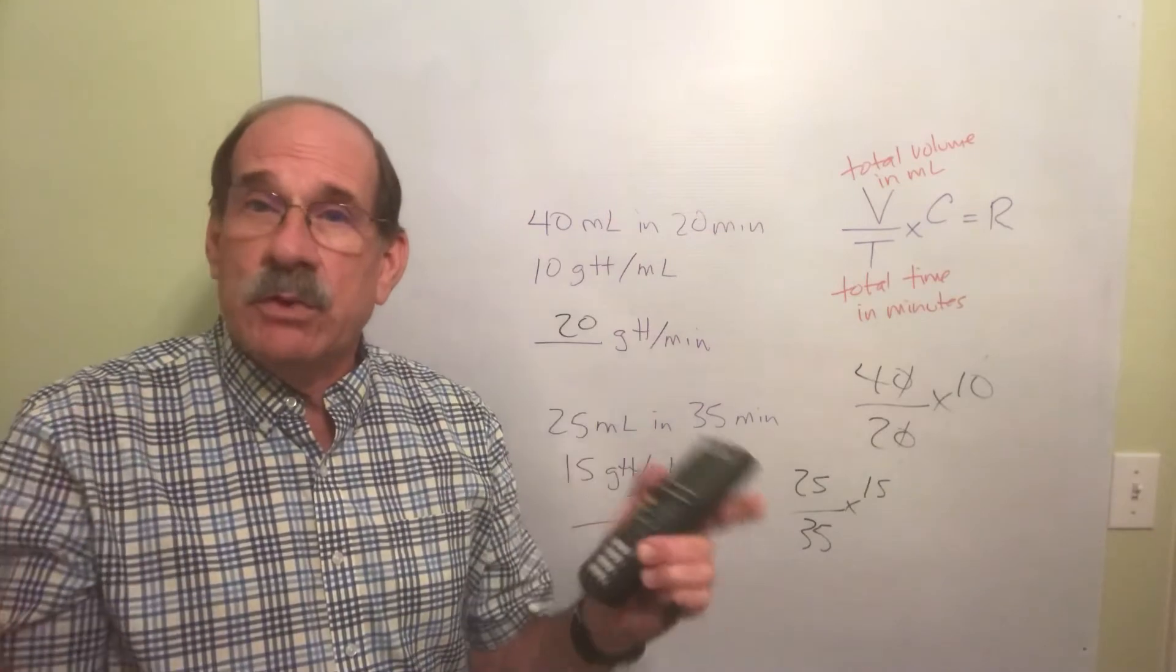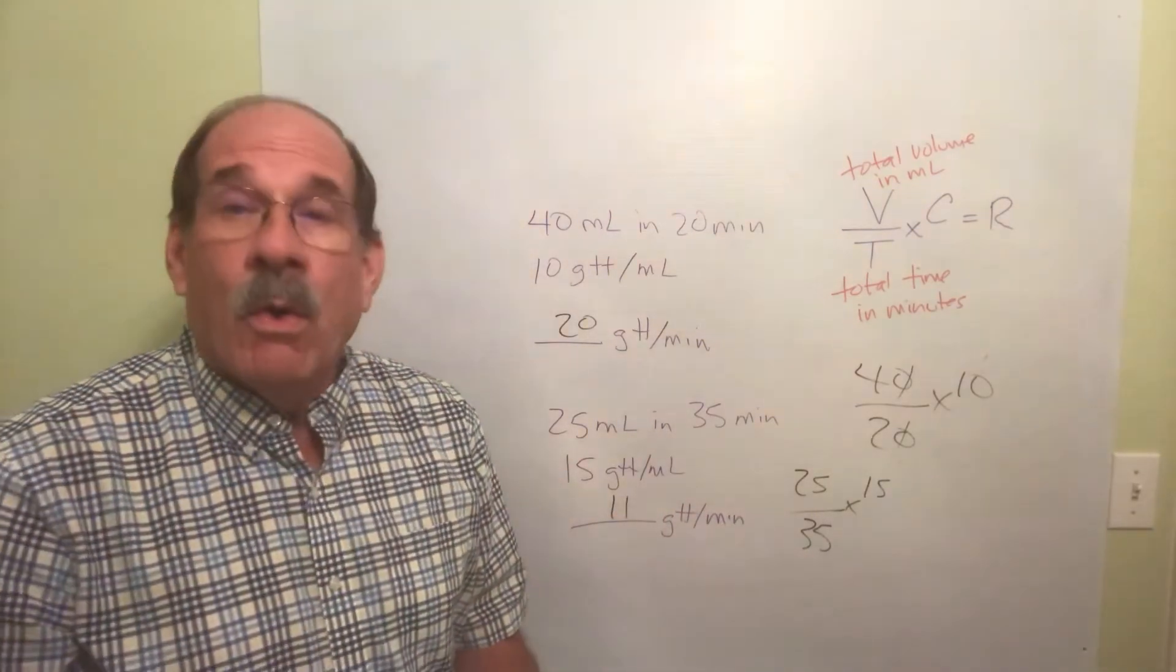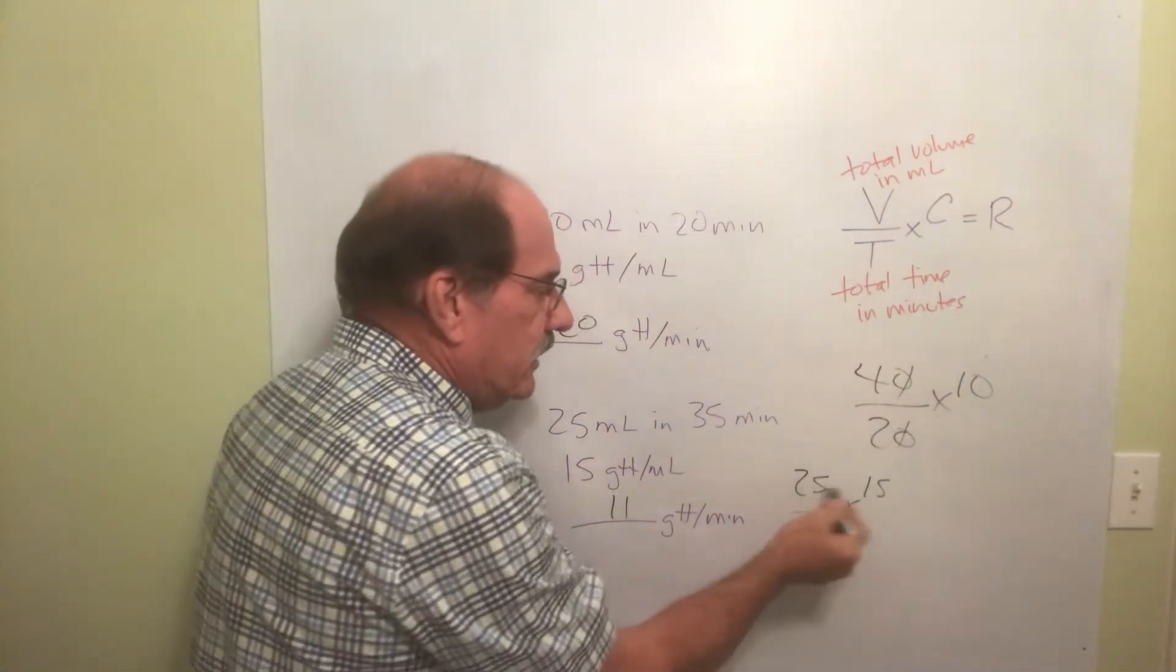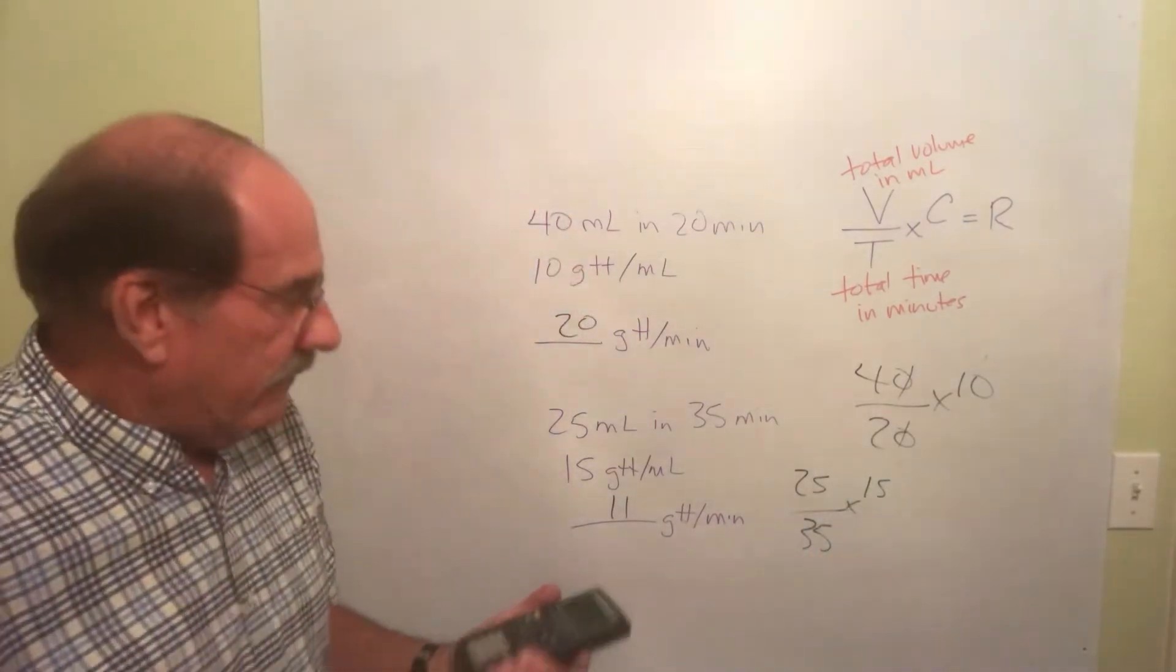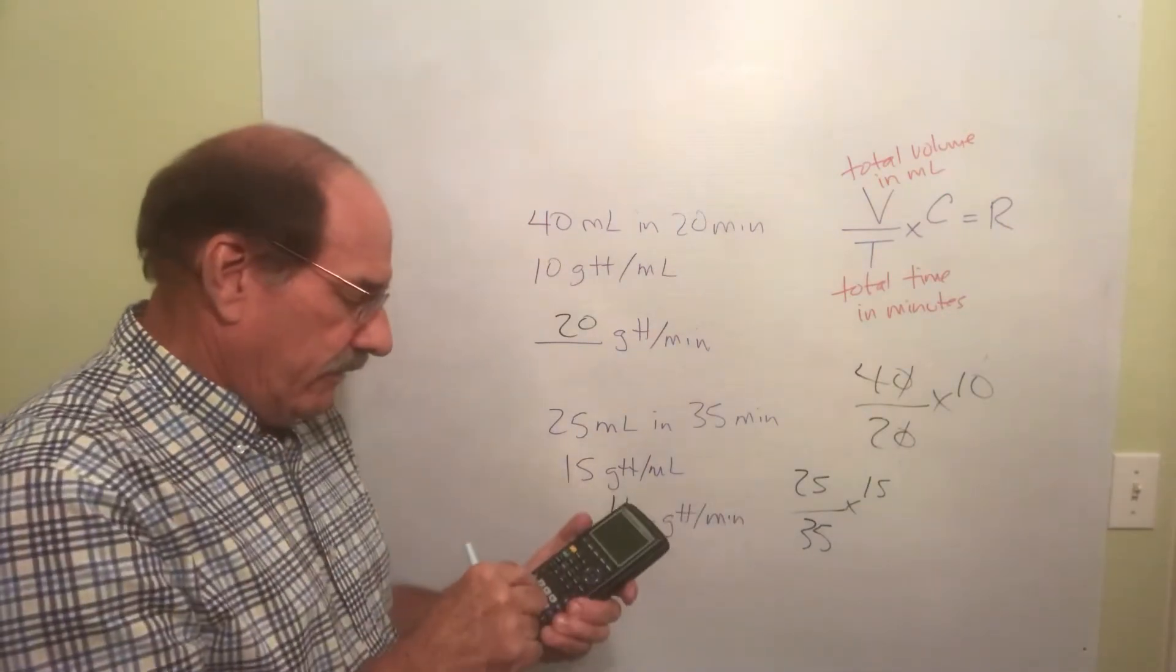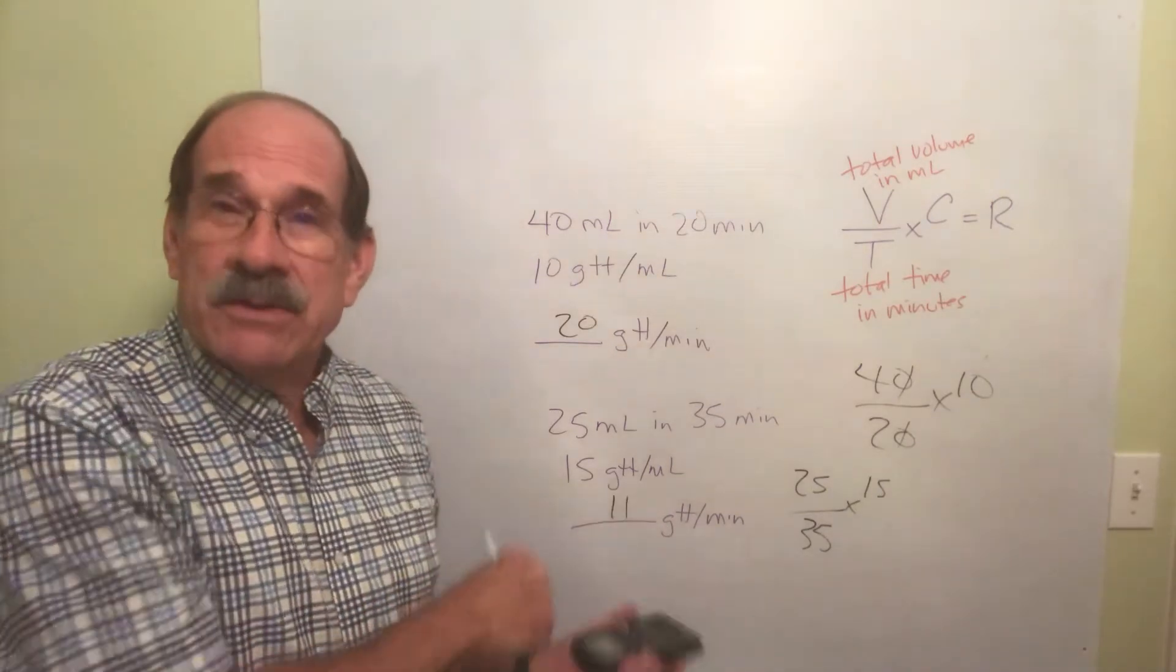Which, of course, rounds off to 11. Nearest whole number. Or to prove it to you, you can do this divided by this times this or this times this divided by this. Whichever one you do, it doesn't matter. Let's do 25 divided by 35 then times 15. It's the same answer. What an amazing thing.